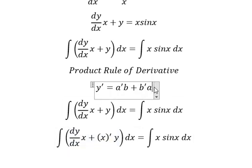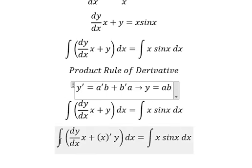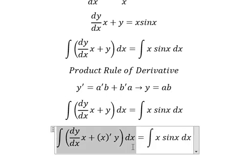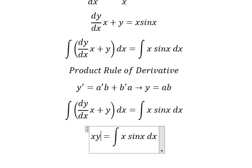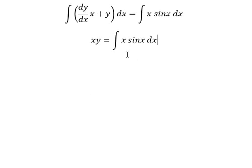So we have the first derivative of (A·B) equals that expression. Taking the integral of both sides, we have Y equals A·B. So the integral gives us s·Y. Now we need to evaluate the right-hand side.